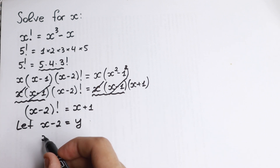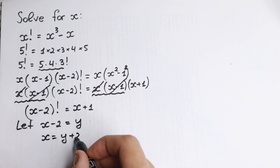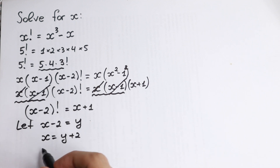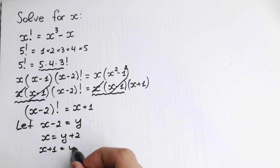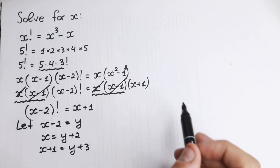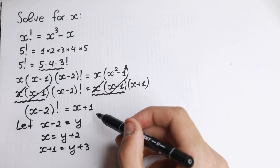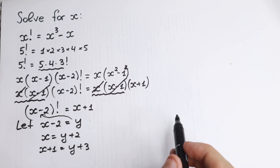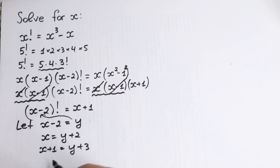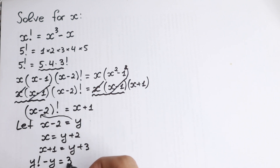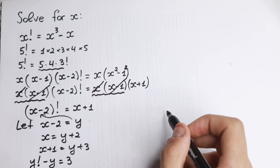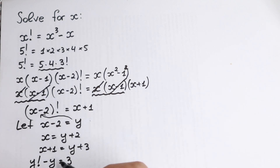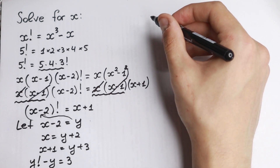From x minus 2 = y, we get x = y plus 2, and therefore x plus 1 = y plus 3. Substituting, (x minus 2) factorial becomes y factorial, and x plus 1 becomes y plus 3. Rearranging gives us y factorial minus y equals 3.